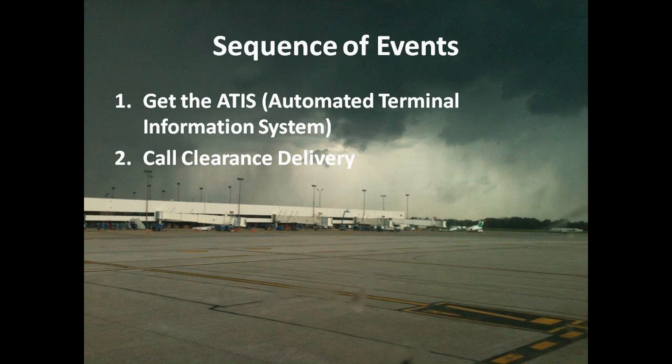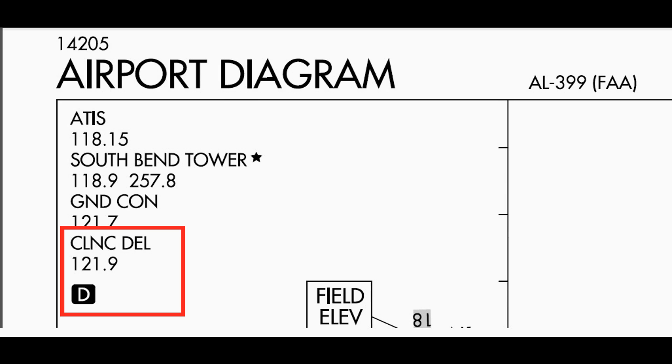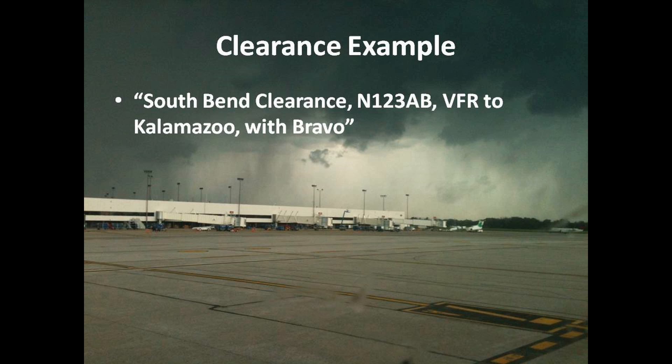After getting the ATIS, you get a route clearance from clearance delivery — in this case on 121.9. For a flight from South Bend, Indiana to Kalamazoo, Michigan, you'd say: 'South Bend clearance, November 123 Alpha Bravo, VFR to Kalamazoo with ATIS information Bravo.' Clearance will then come back with a routing, altitude, and so on. I won't go into too much detail on that here — I'll cover it more in the Microsoft Flight Simulator portion.